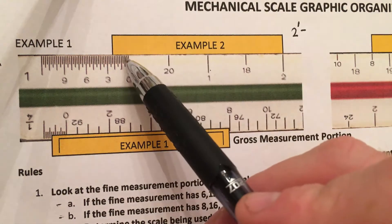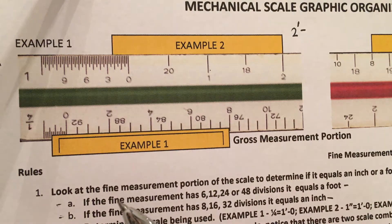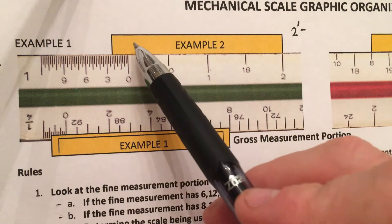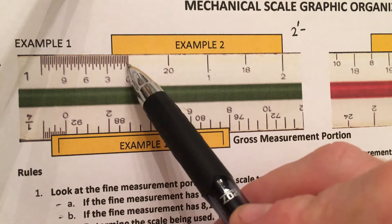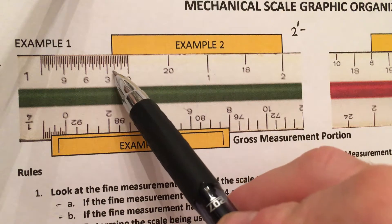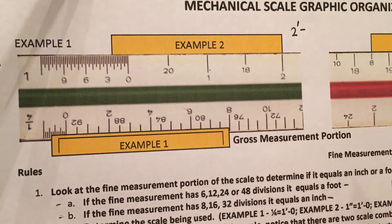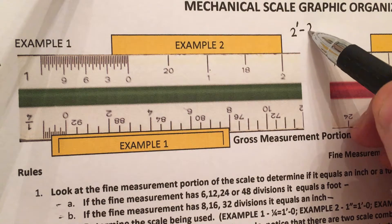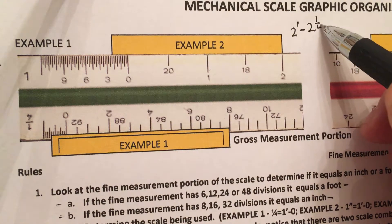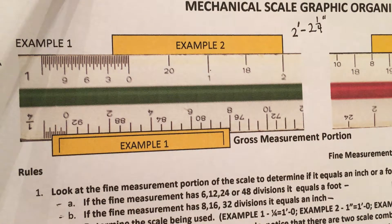And then I look and see how far into my fine measurement my object extends, and I can see it extends to one inch, two inch, about two and a quarter inches. So I would write two feet, two and one quarter. And I can put the inch marks there if I want to.